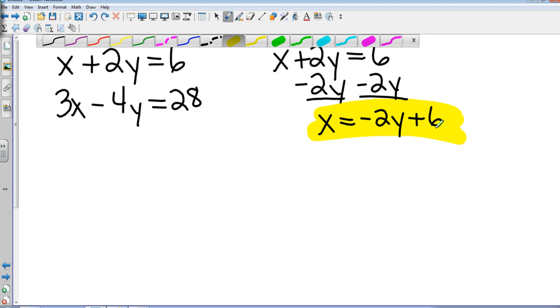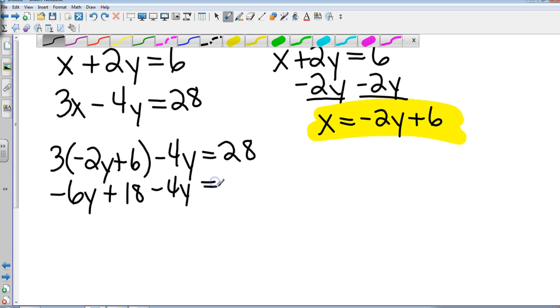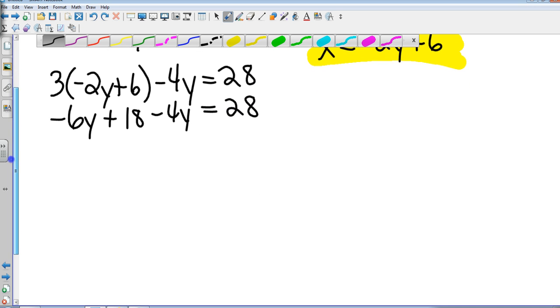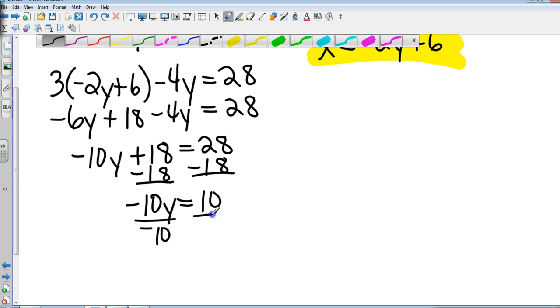I'm going to substitute that into the second equation. So I'm going to have 3 times negative 2y plus 6 minus 4y equals 28. That gives me negative 6y plus 18 minus 4y equals 28. I know these steps seem lengthy, but we've got to show everything. Negative 6y minus 4y is negative 10y. Subtract 18 from both sides.